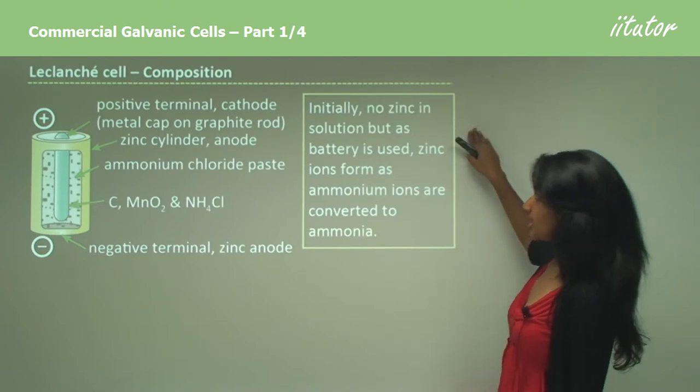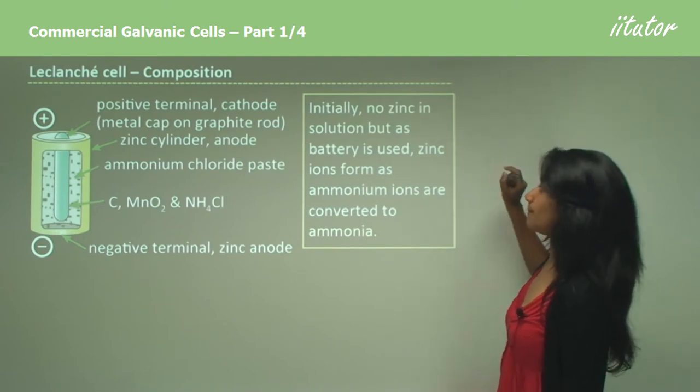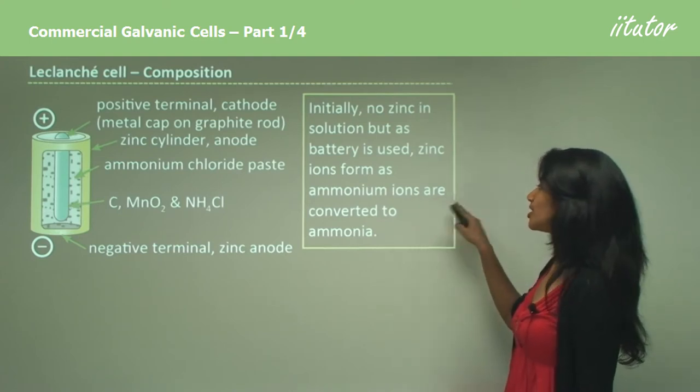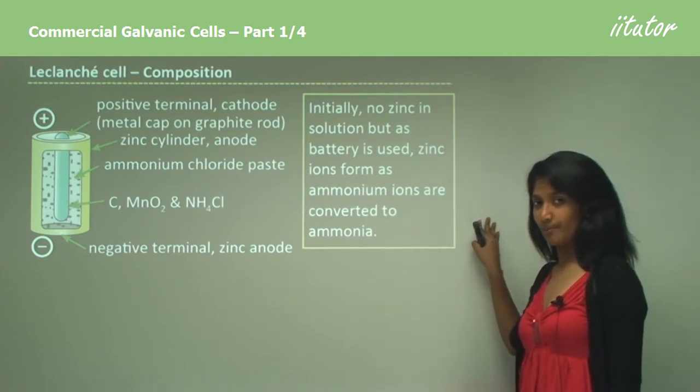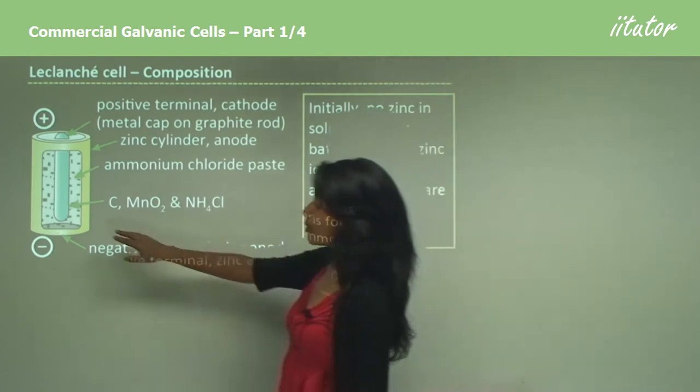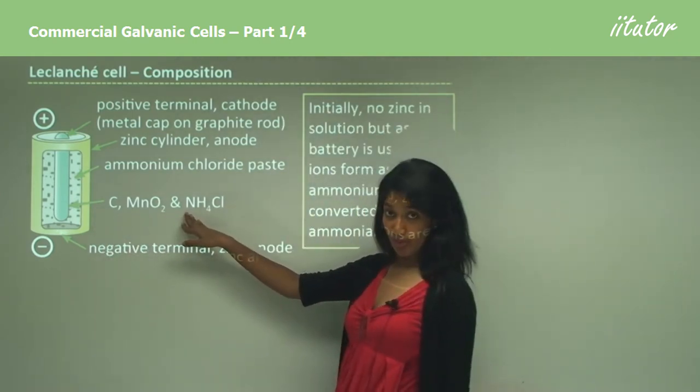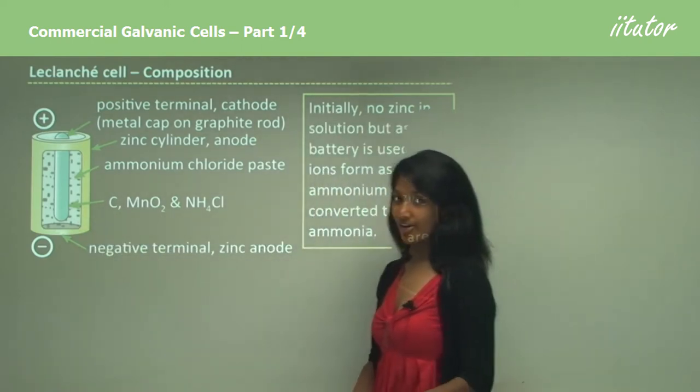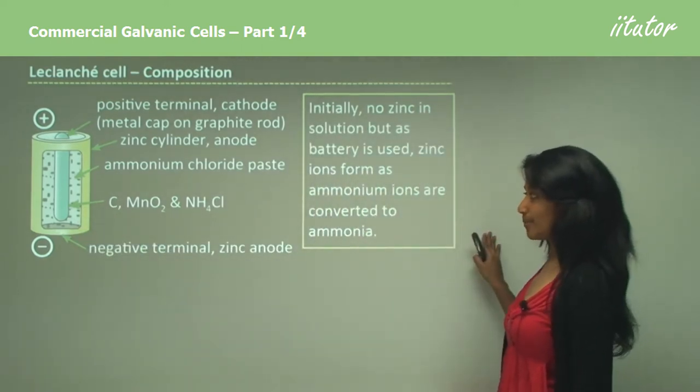And then initially, no zinc in solution. But as battery is used up, the zinc ions form as ammonium ions are converted to ammonia. Now as the ammonium ions are converted to ammonia, we have zinc solid becoming zinc ions. And that is primarily what is happening here.